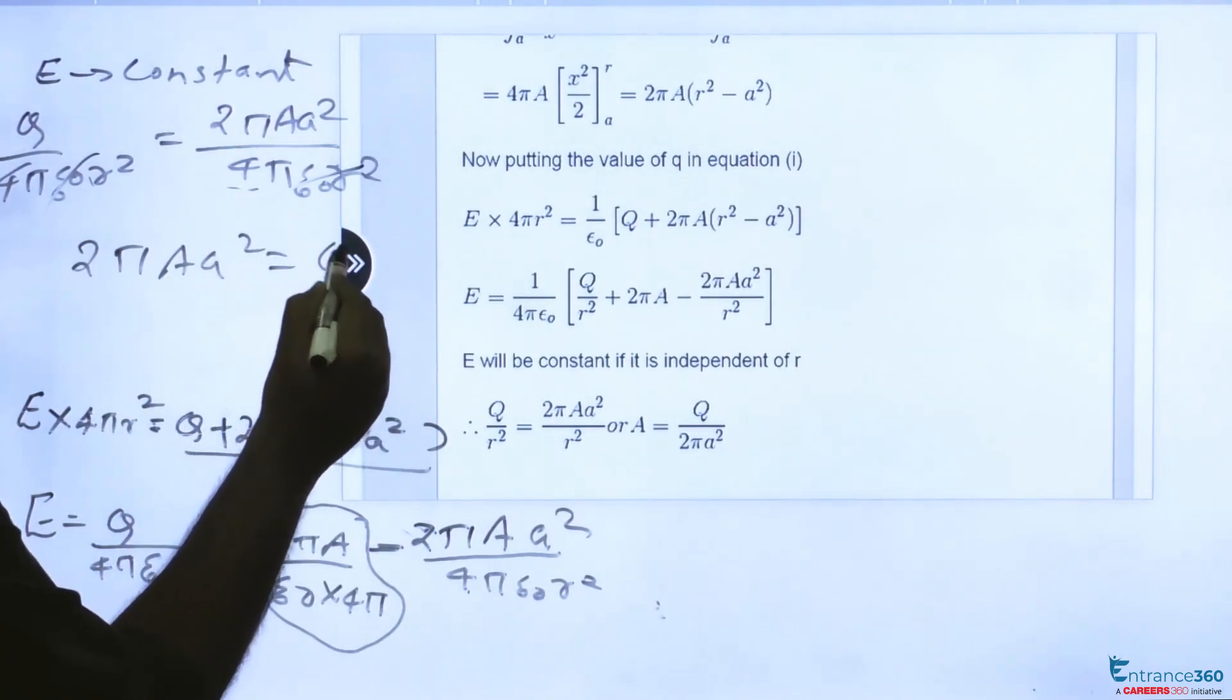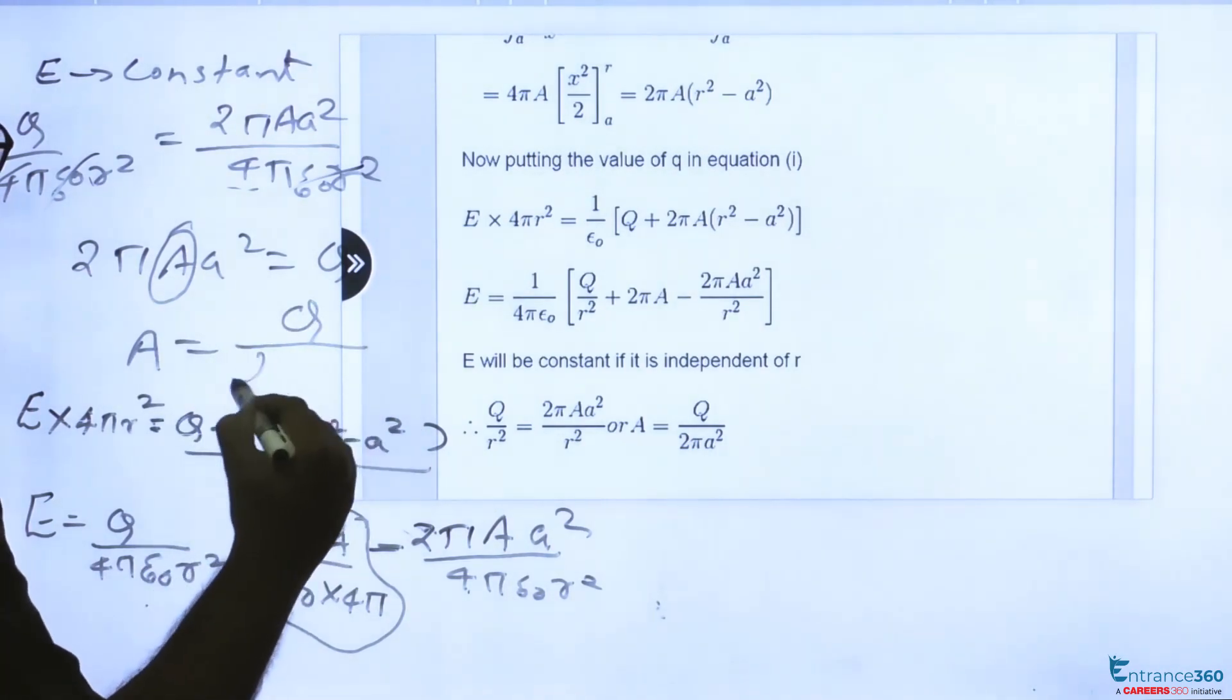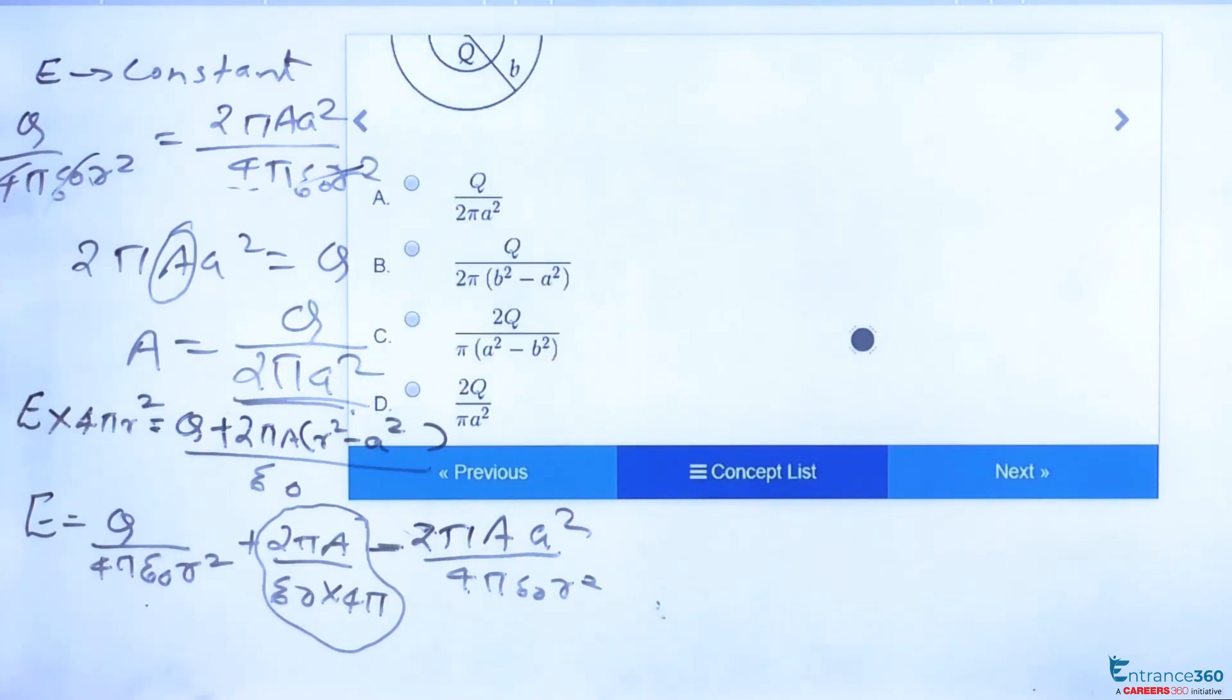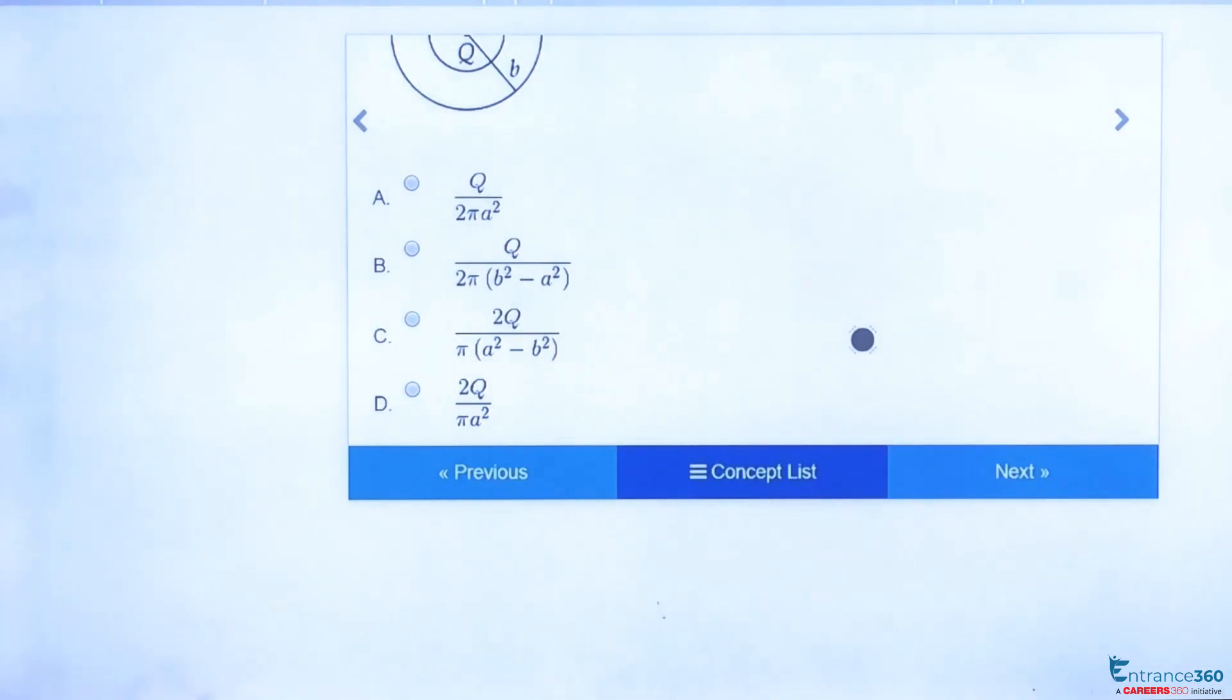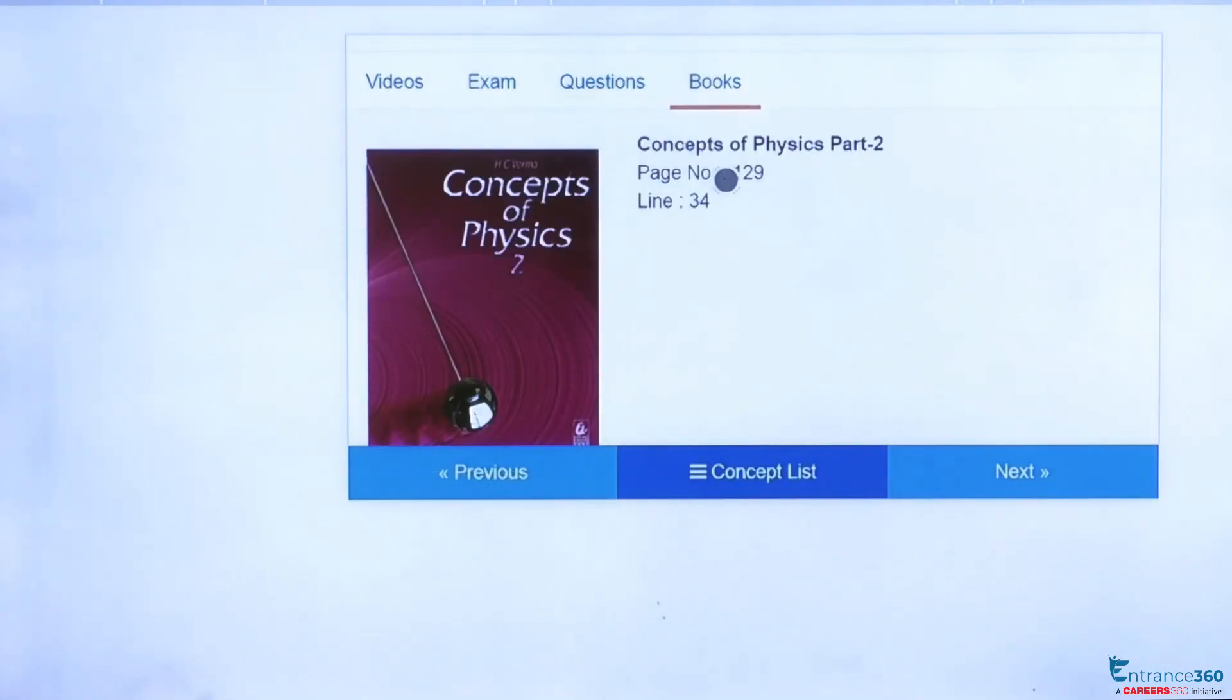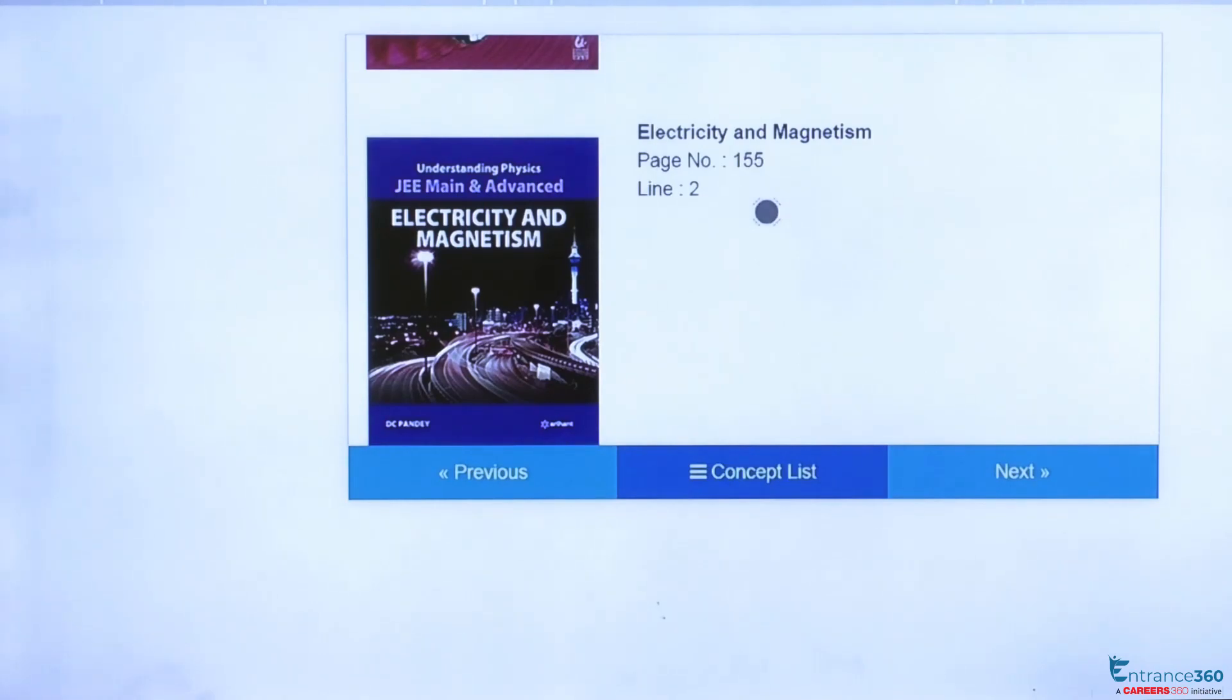So this is our option. q by 2 pi A square is our first option A, so right answer is A. To know more about this concept you can watch the video here which is of small duration and you can go through the books HC Verma page number 129 line number 34 and also DC Pandey page number 155 line number 2. Thank you students.